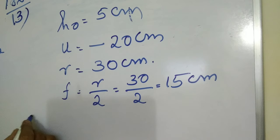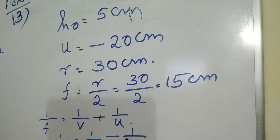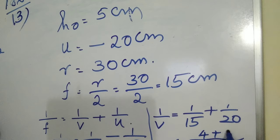Then what is mirror formula? For mirrors, 1 by F equals 1 by V plus 1 by U. Write the formula first, then substitute. 1 by 15 equals 1 by V minus 1 by 20. From this, v can be calculated. 1 by V equals 1 by 15 plus 1 by 20. 1 by V equals 4 plus 3, 7 by 60.